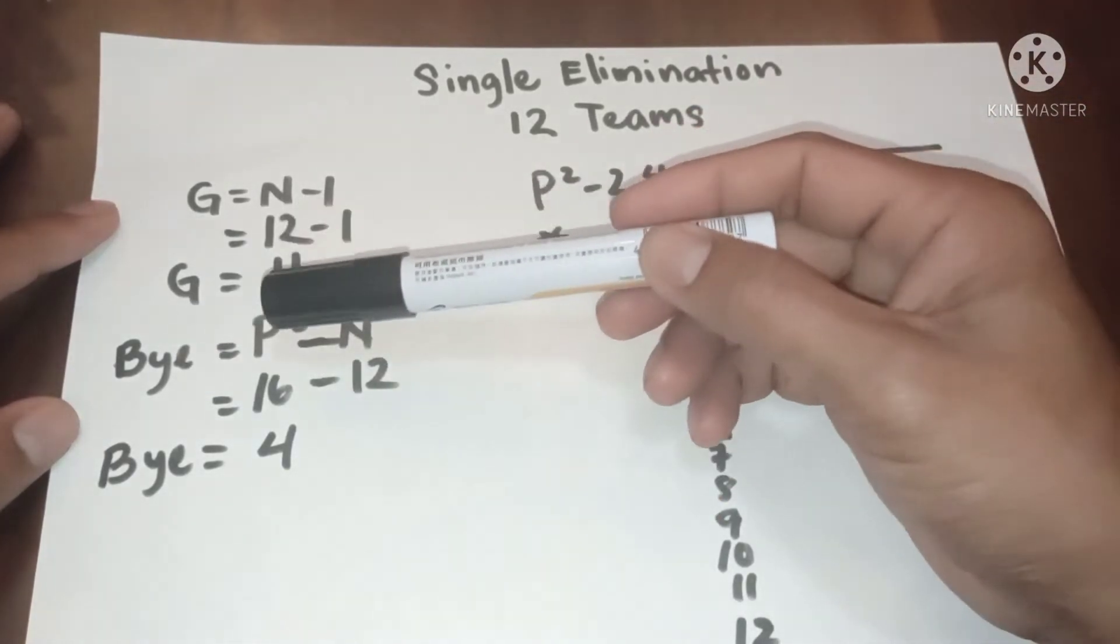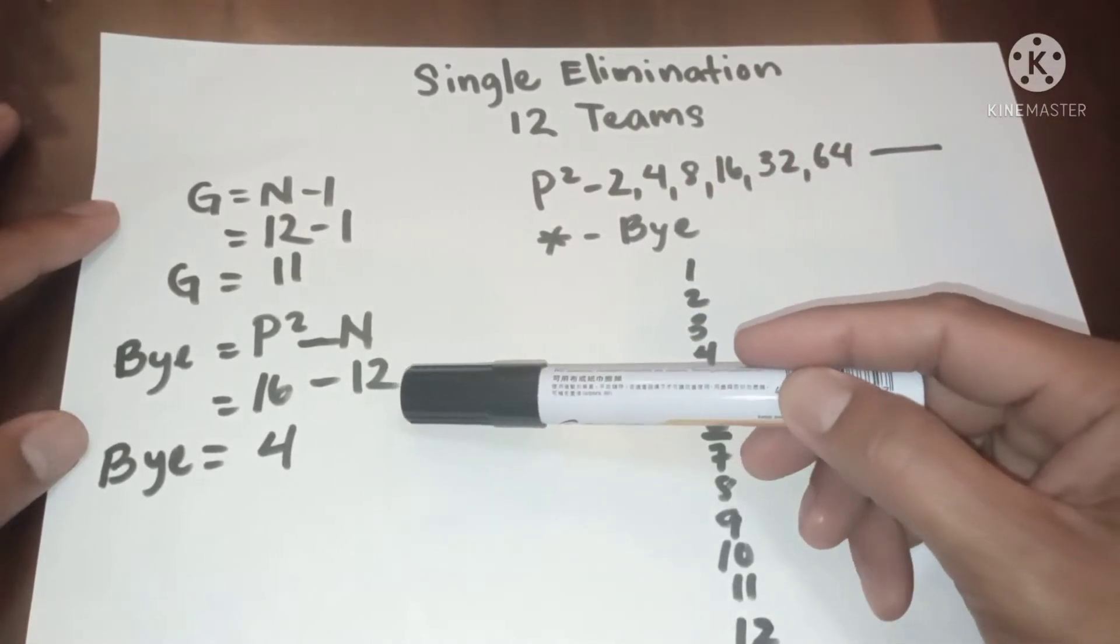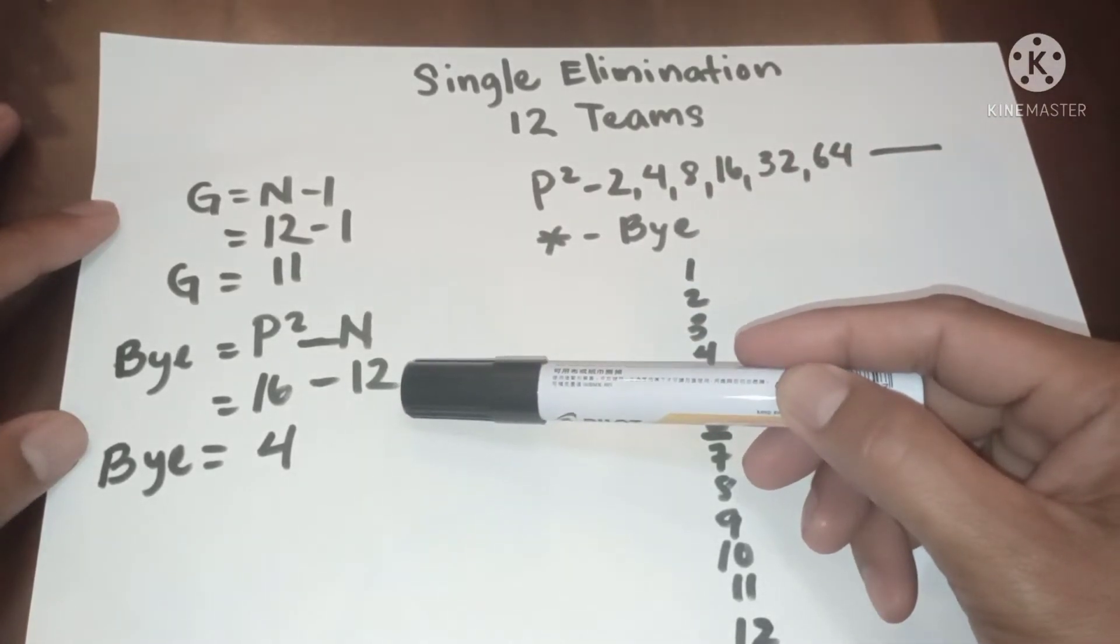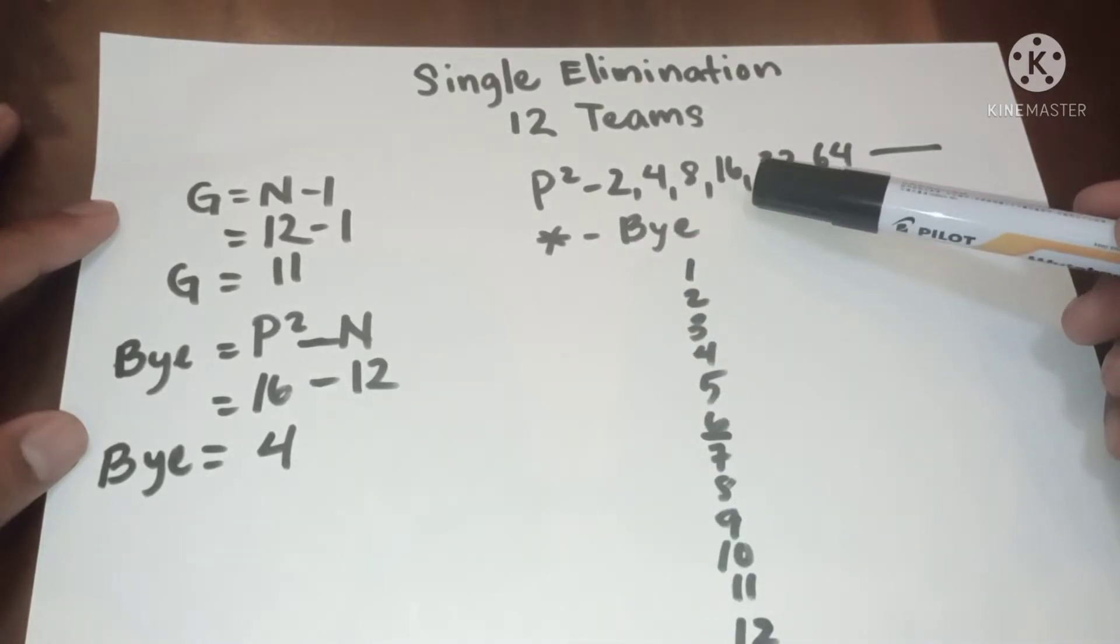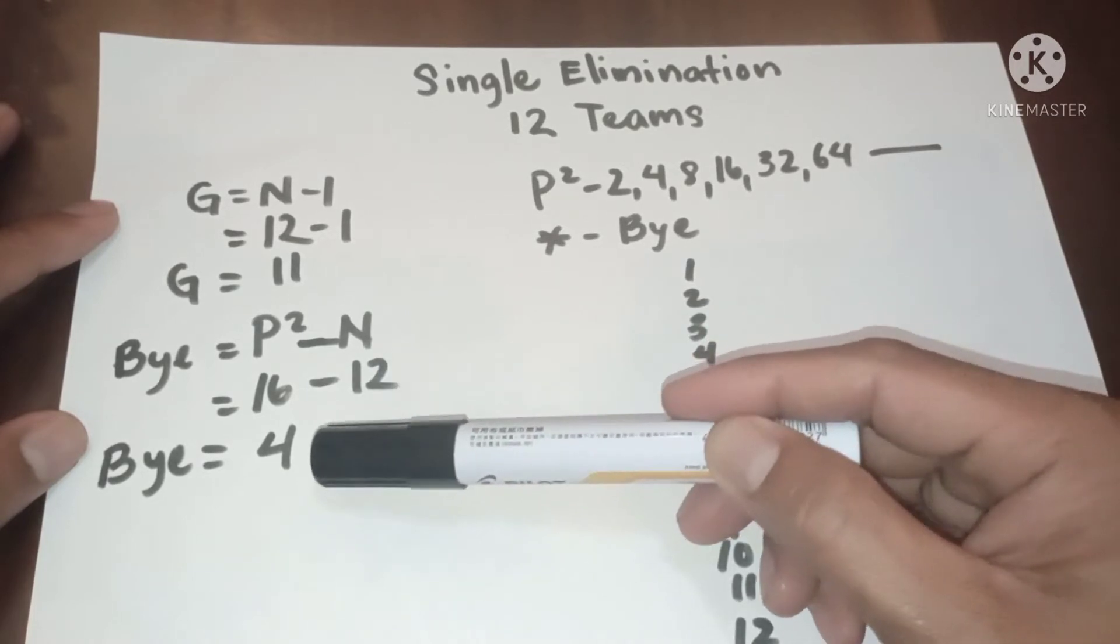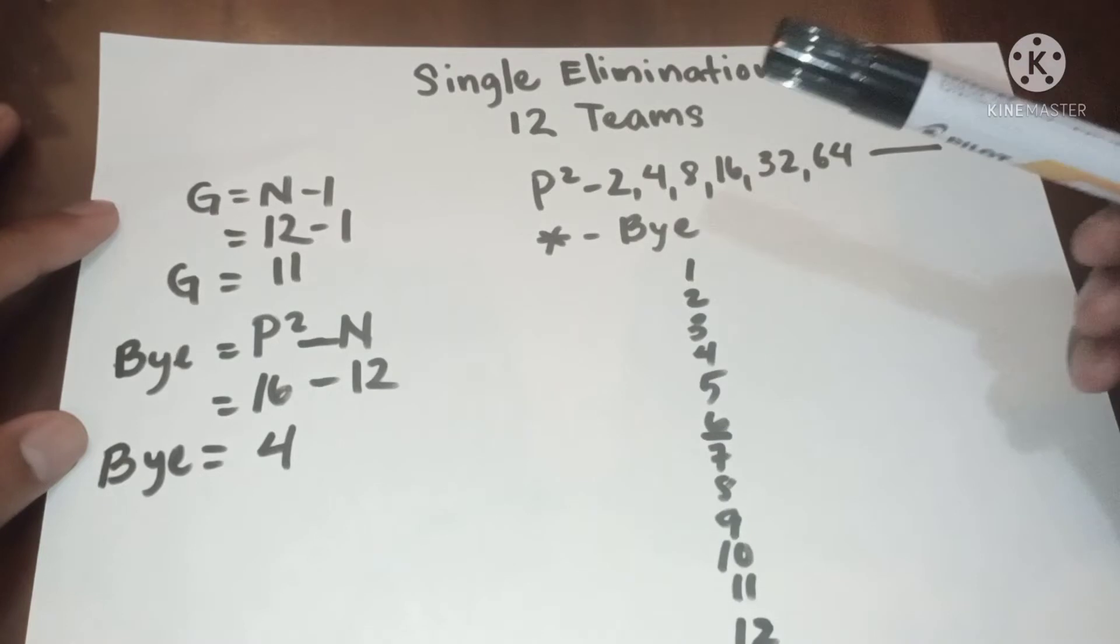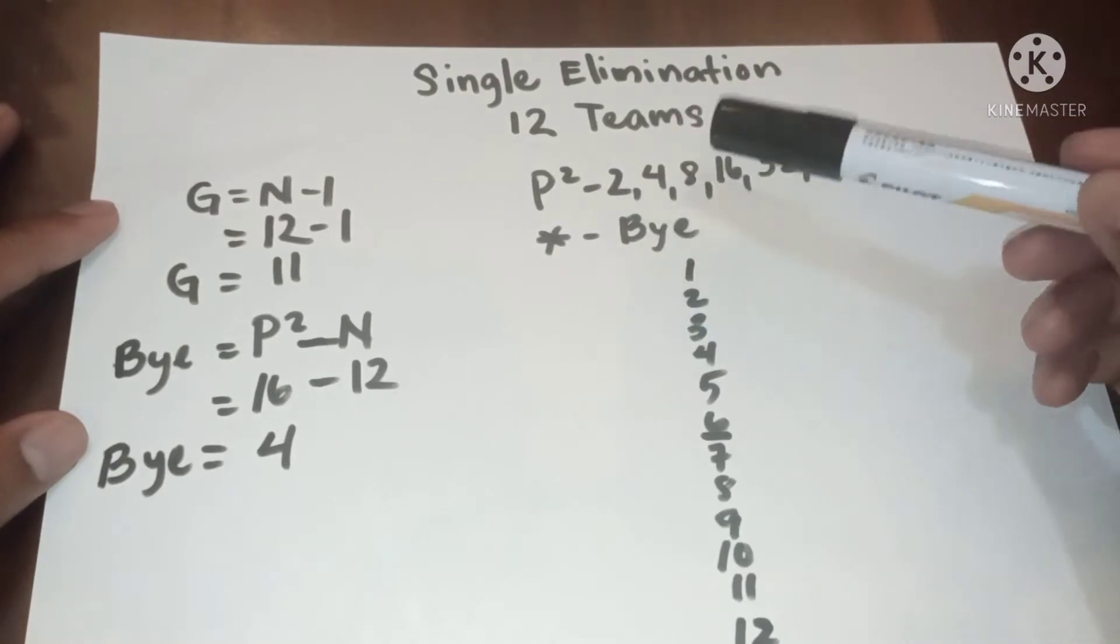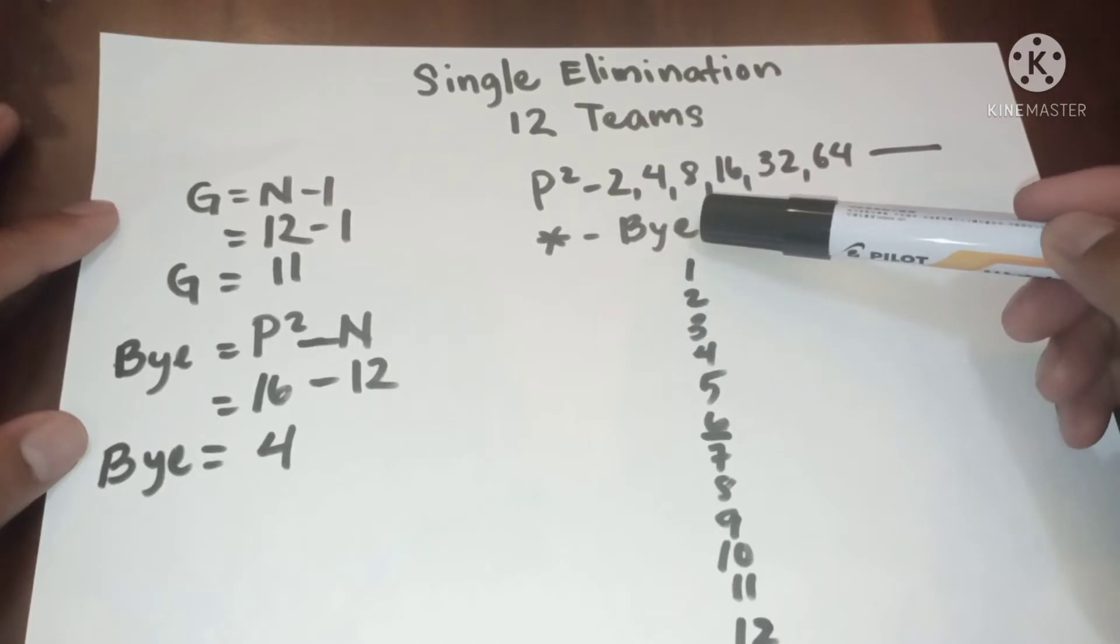The next higher power of 2 to 12 is 16, so 16 minus 12 equals 4, meaning we have four byes. Take note that we use the asterisk to identify the bye.